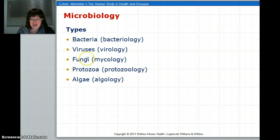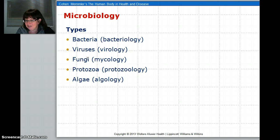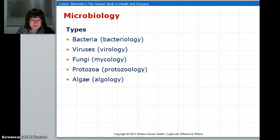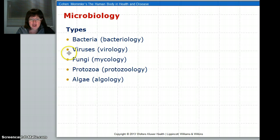Then you have fungi — things like athlete's foot. Yeast infection is a type of fungi. Protozoan includes amoebic dysentery. And there's algae, which includes algae blooms and blue-green bacteria. We'll also look at worms.